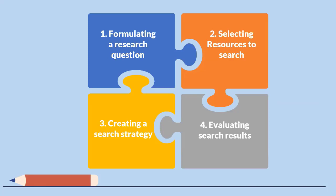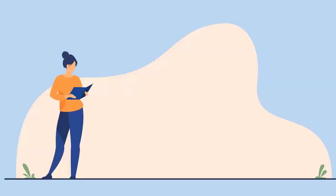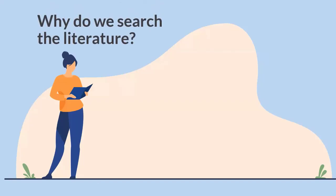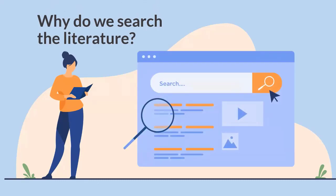Let's begin by talking about why we're here — why we want to search the literature. A literature search is a systematic search of all relevant literature on a specific topic. The literature search provides evidence to support many academic and clinical functions. The evidence gathered can be used to answer a clinical question, write a research or review article, prepare a presentation, write a grant application, and more.